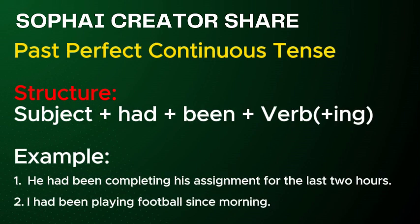Past perfect continuous tense. Structure: Subject plus had, plus been, plus verb plus -ing. Examples: 1. He had been completing his assignment for the last two hours. 2. I had been playing football since morning.